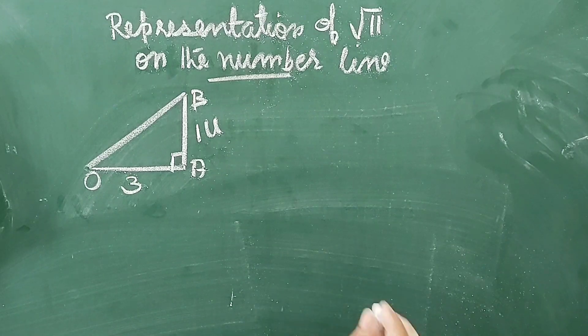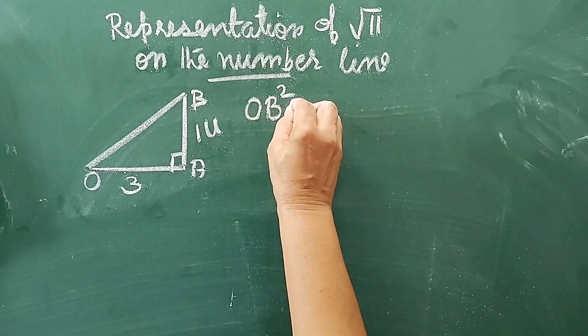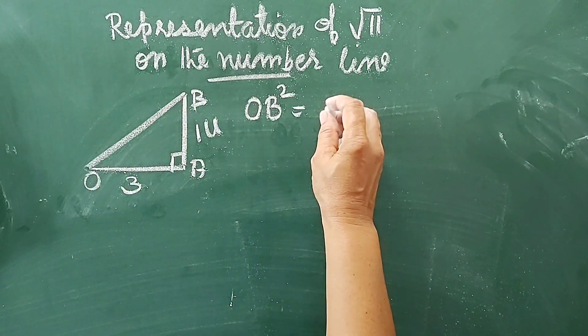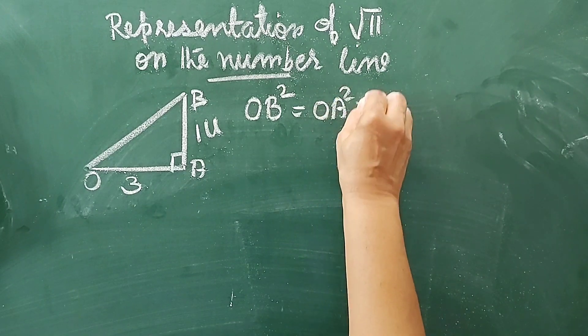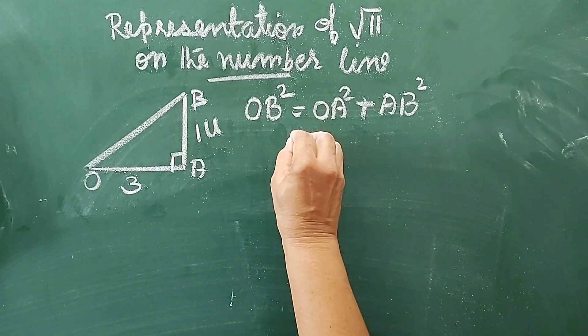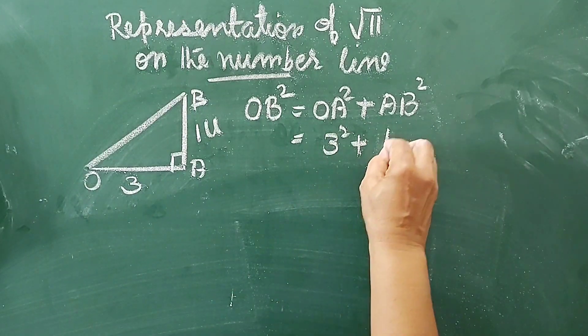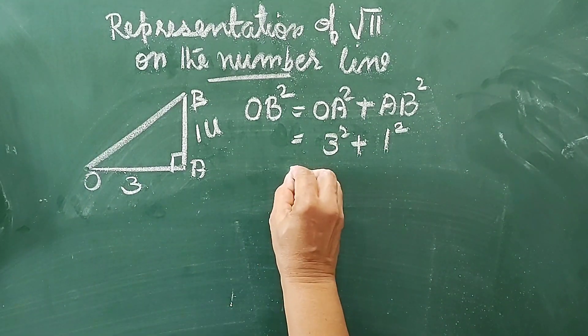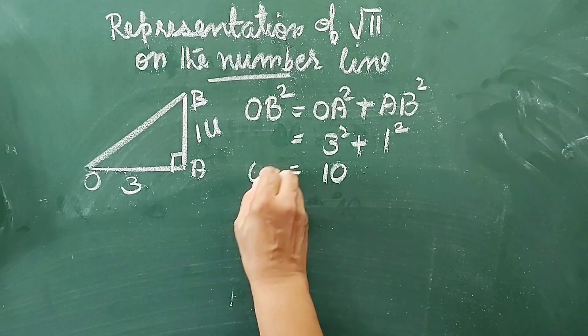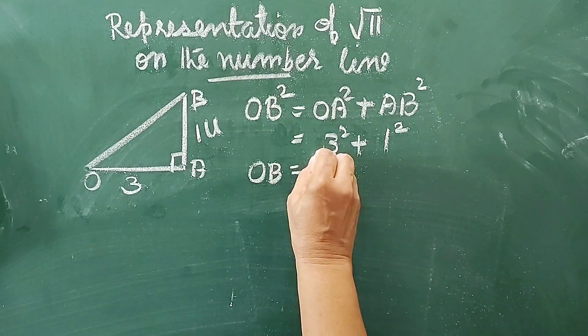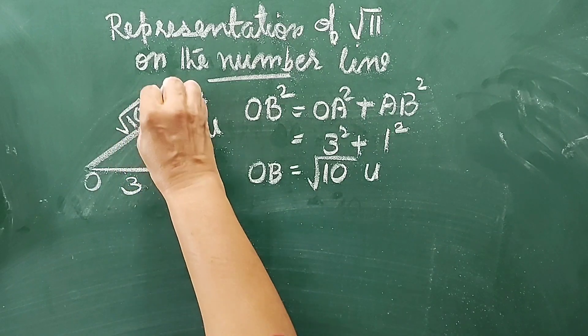And its height is 1 unit and base is considered as 3 units. Now, by Pythagorean theorem, we know OB² is equal to, that is hypotenuse² is equal to OA² + AB², that is 3² + 1² = 9 + 1 = 10. OB² is 10, so OB equals √10 units. That is, this OB represents √10 units.